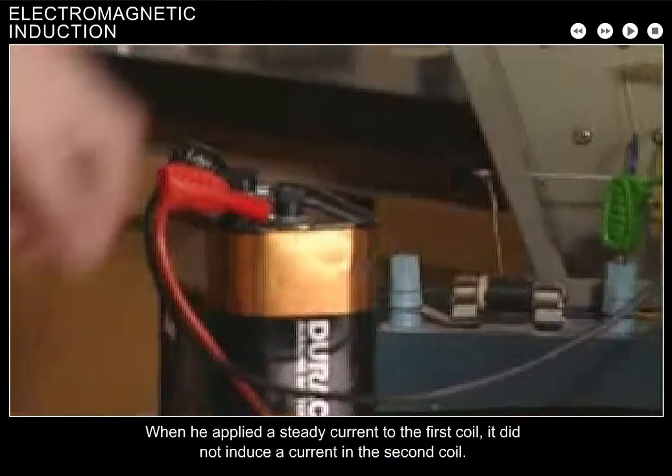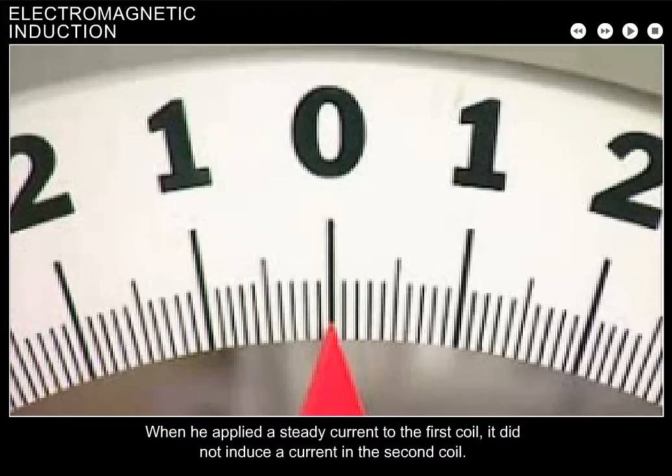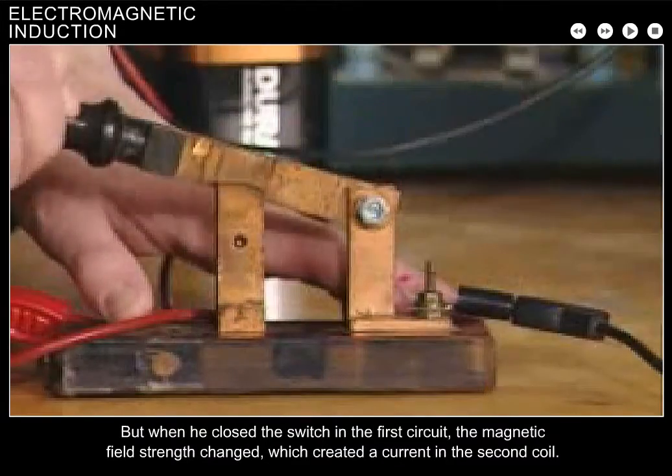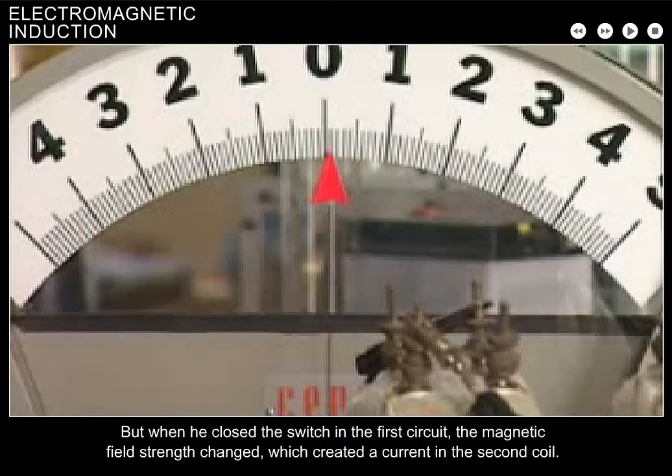When he applied a steady current to the first coil, it did not induce a current in the second coil. But when he closed the switch in the first circuit, the magnetic field strength changed, which created a current in the second coil.